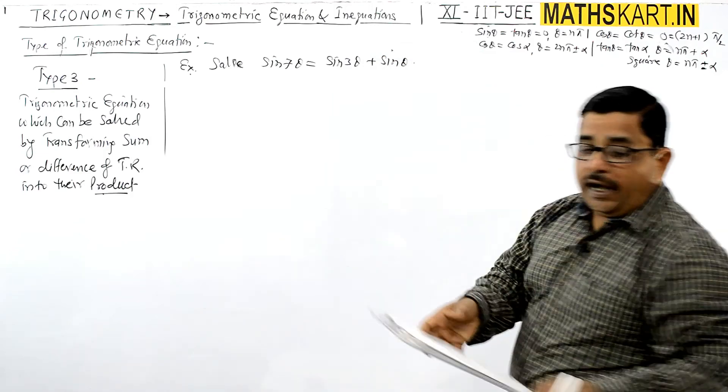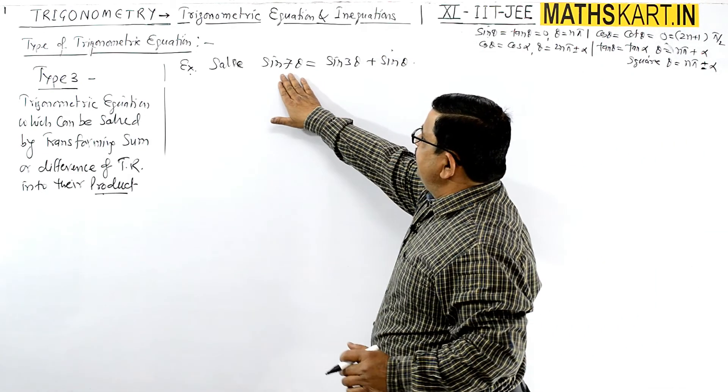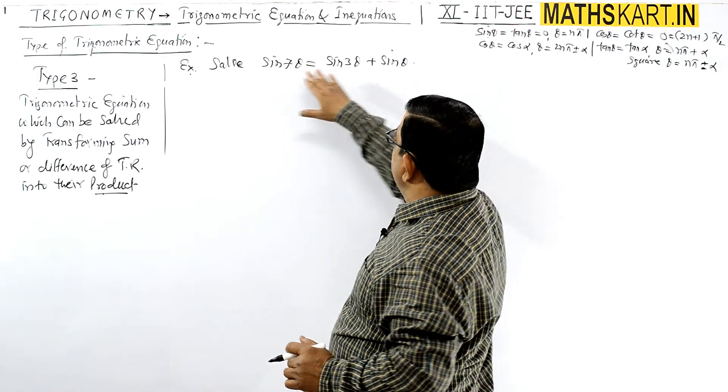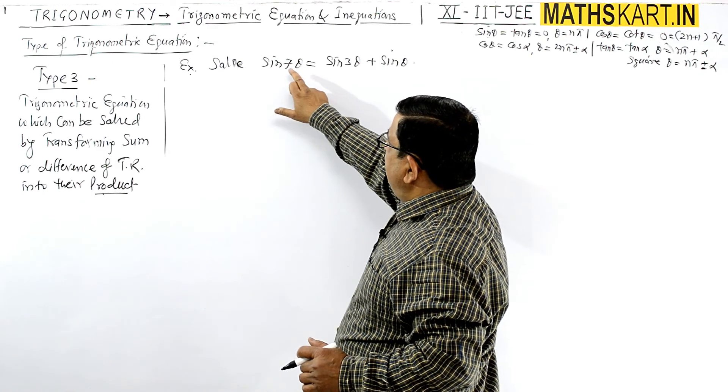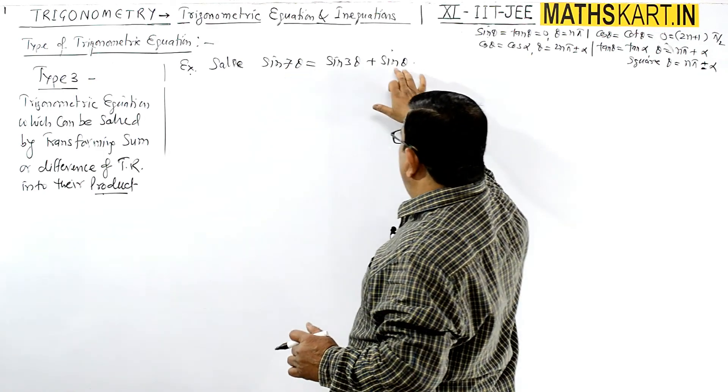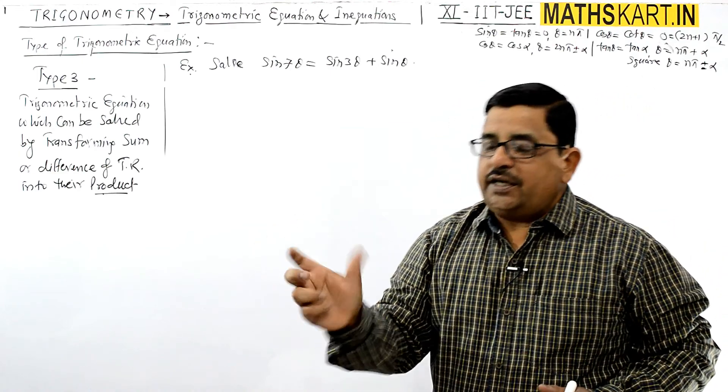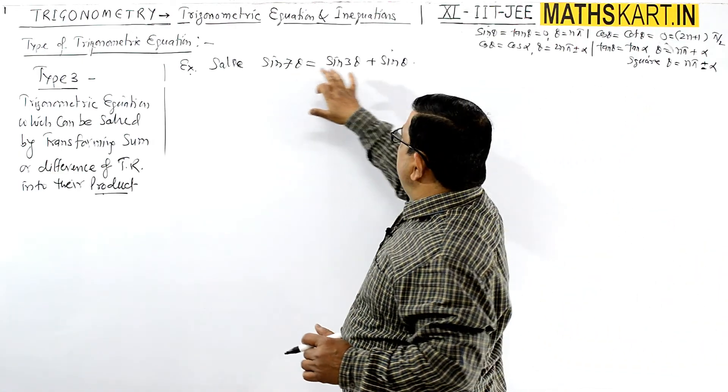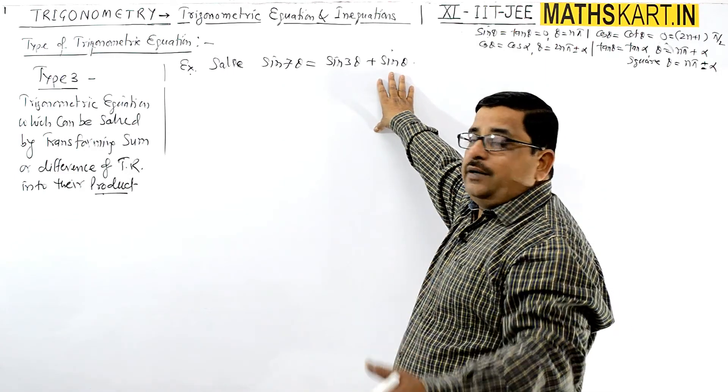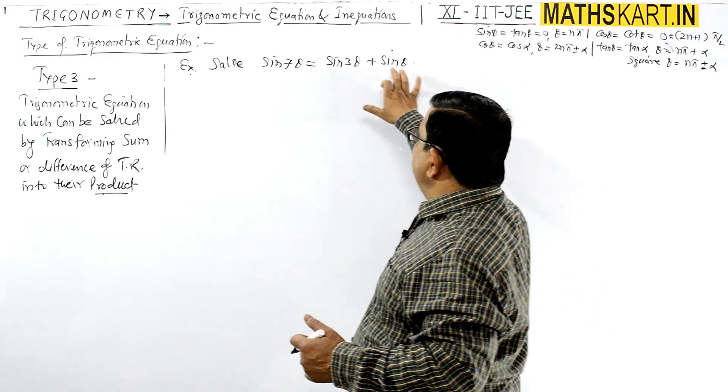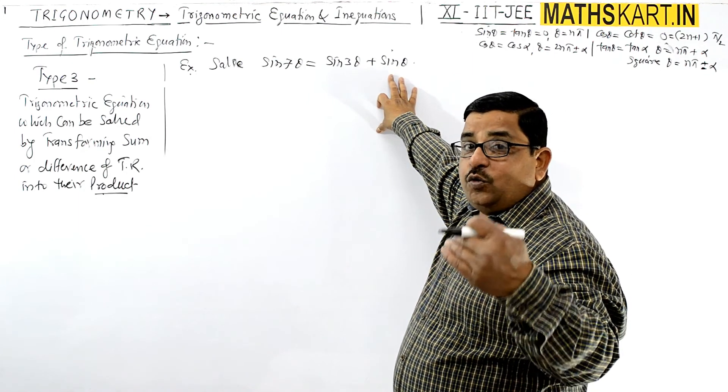Now you have to see which terms to combine. There's 7θ and θ, these two will combine using the C and D formula - they add once and subtract once. When they add, 7 plus 1 is 8, divided by 2 is 4θ. When they subtract, 7 minus 1 is 6, divided by 2 is 3θ.